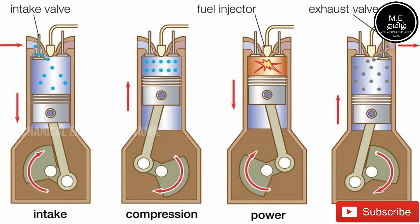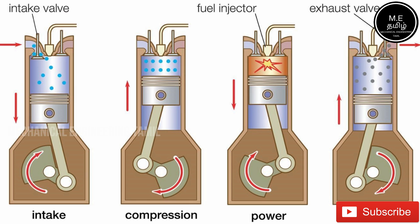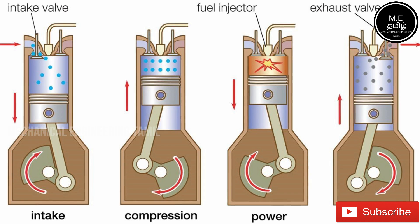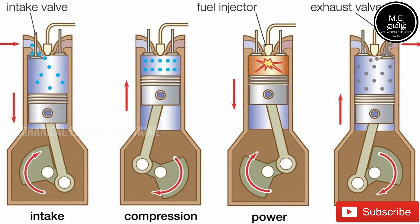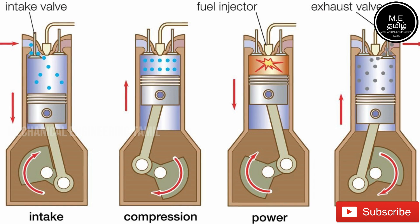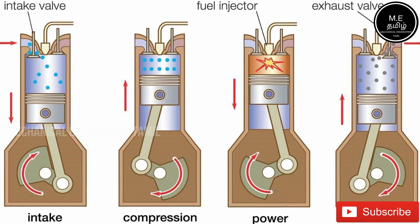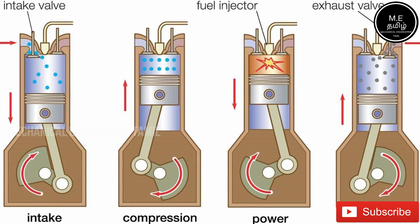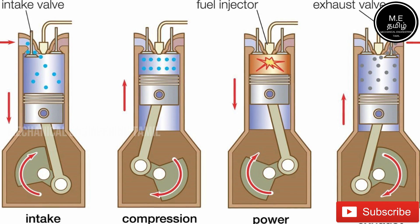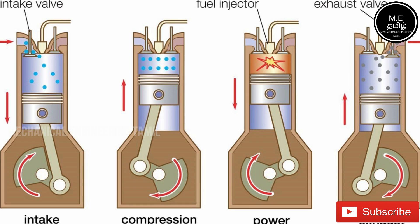In a compression engine, the air is highly compressed, creating very hot air inside the cylinder. You can then spray diesel fuel onto that hot air, and the diesel will ignite due to the heat — this is the compression ignition process.